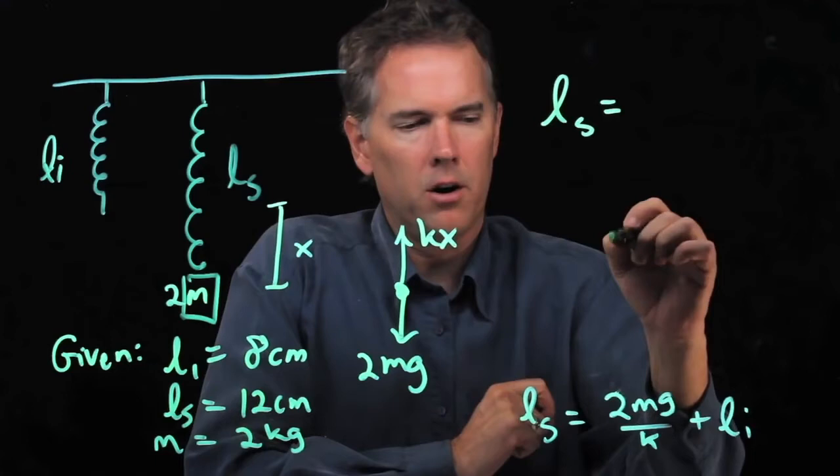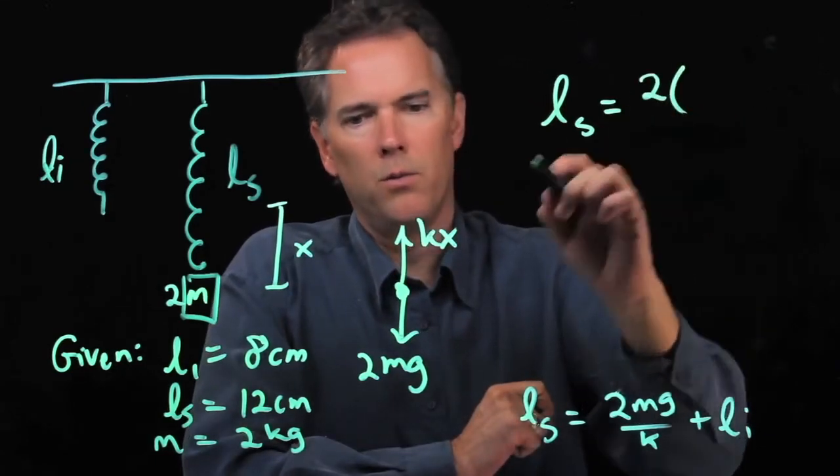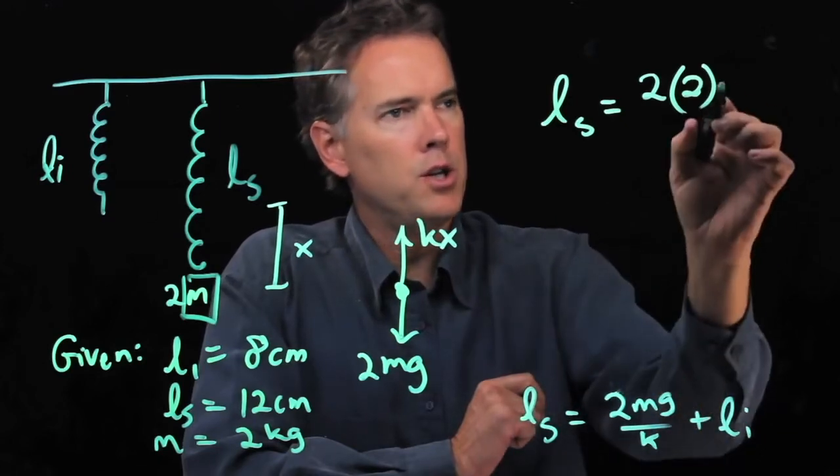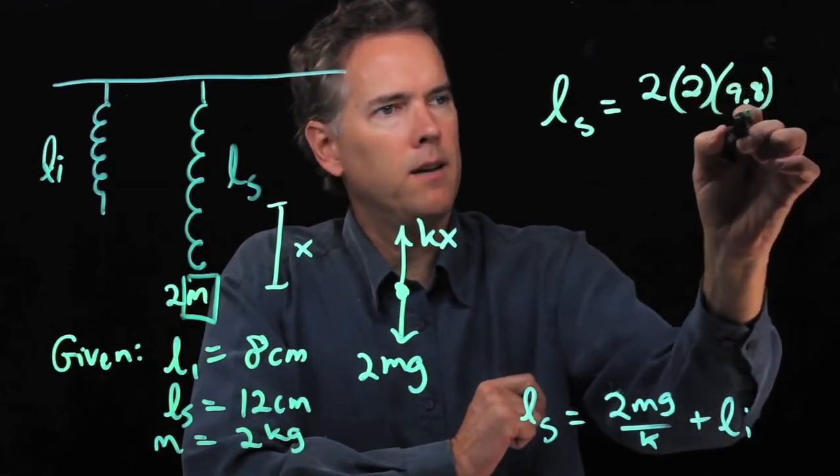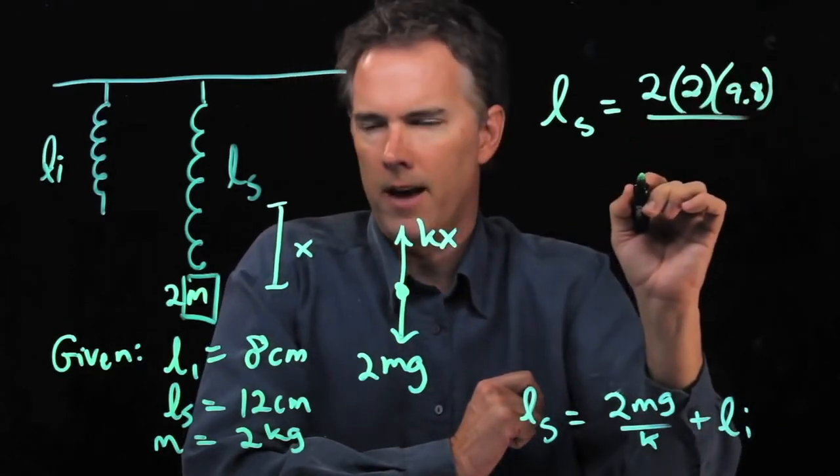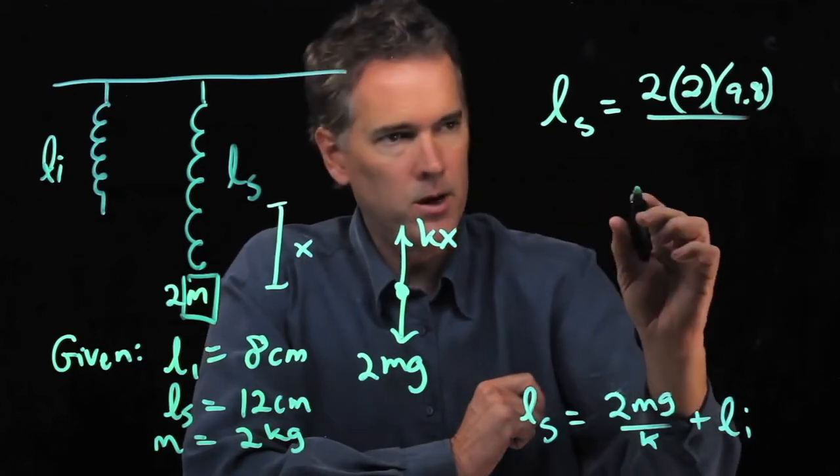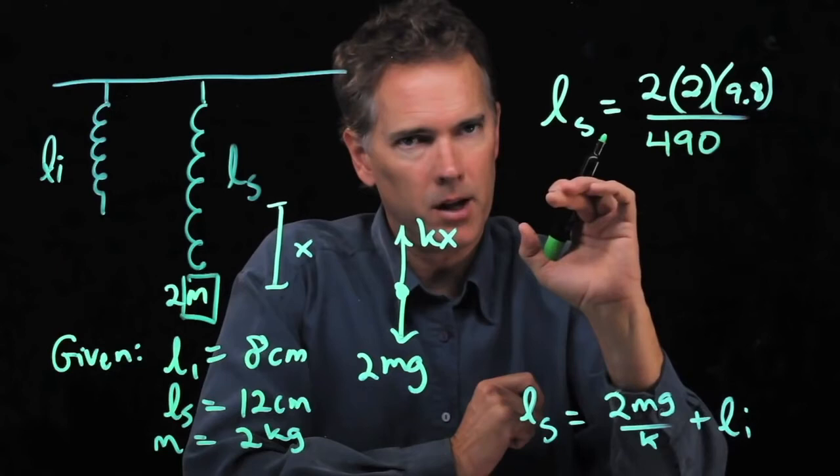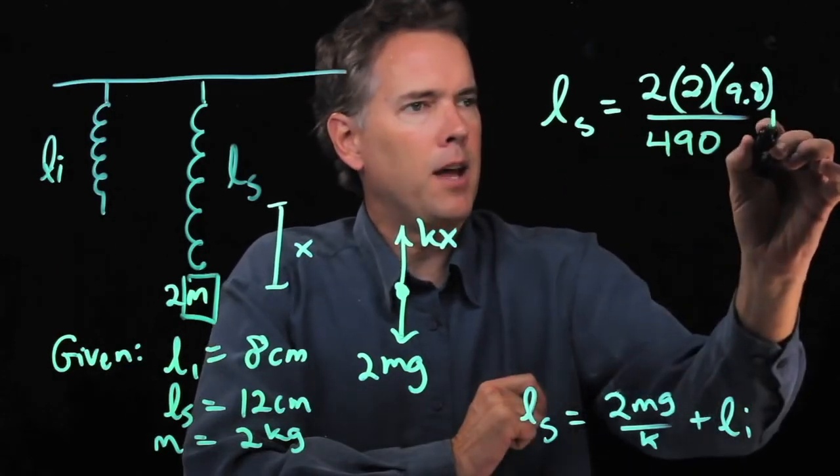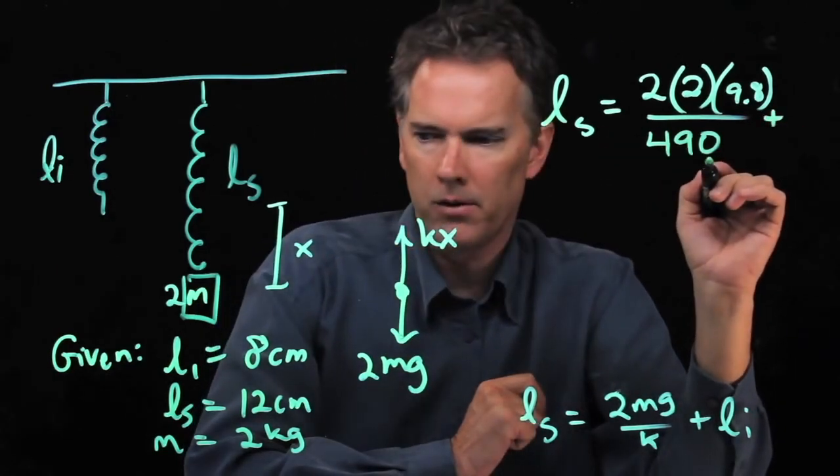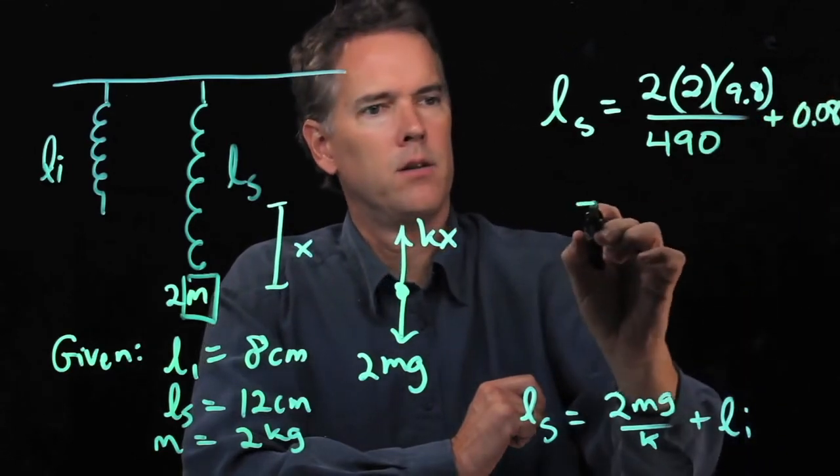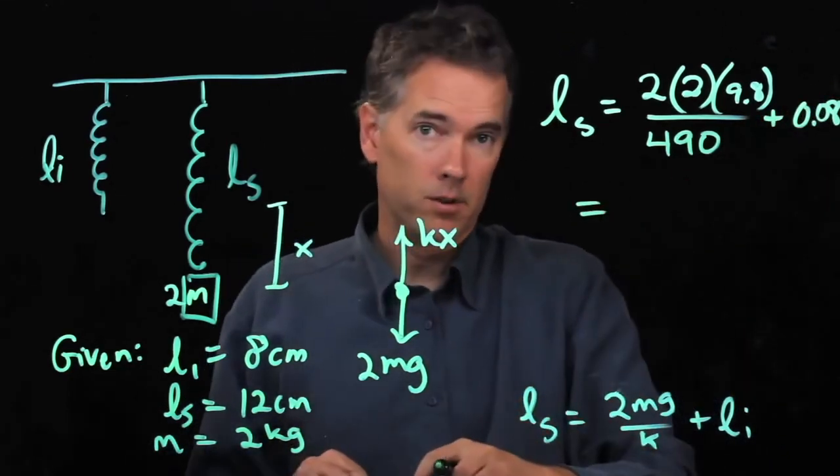Okay, so the numbers are the following. We've got a 2. We had our original mass, which was 2 kilograms. We've got g, which is 9.8. We're going to divide all that by k. We just found out what k was, 490. That doesn't change, right? It's the same spring. And then we have to add li, which we said was 8 centimeters, 0.08 in SI units. Let's see what we get.